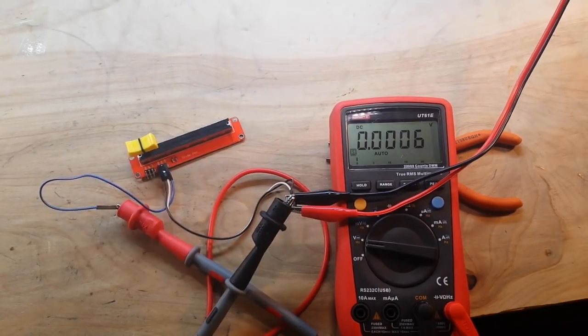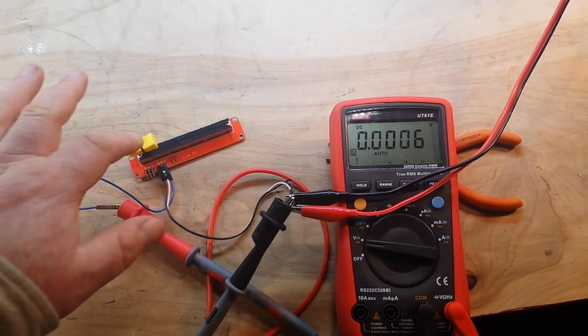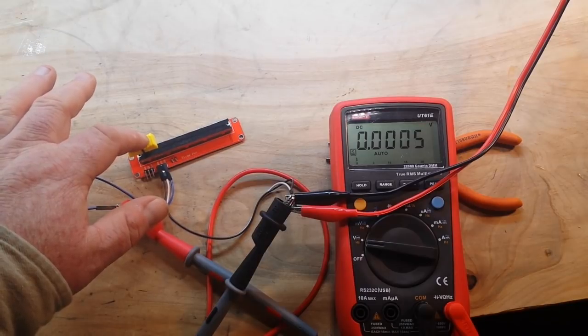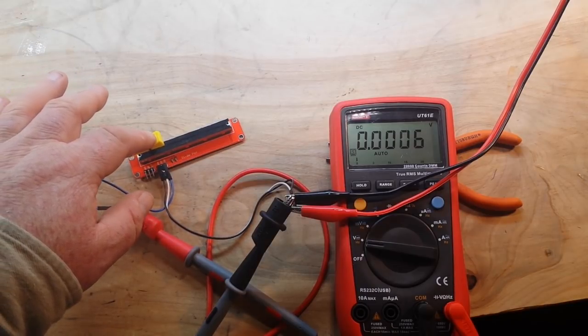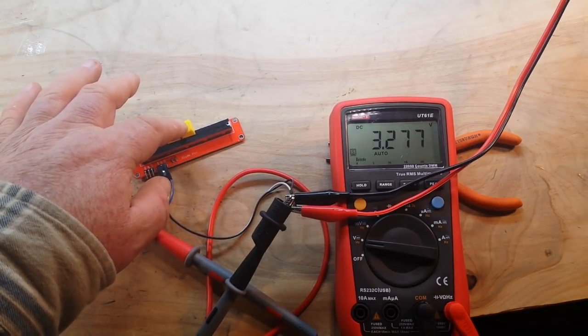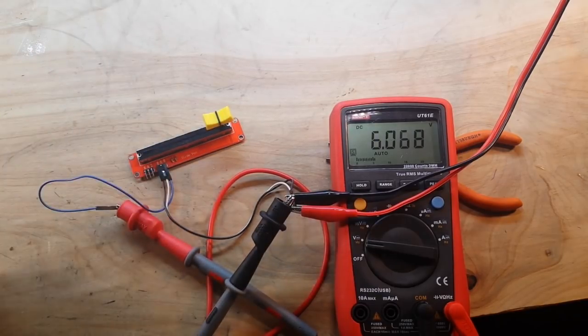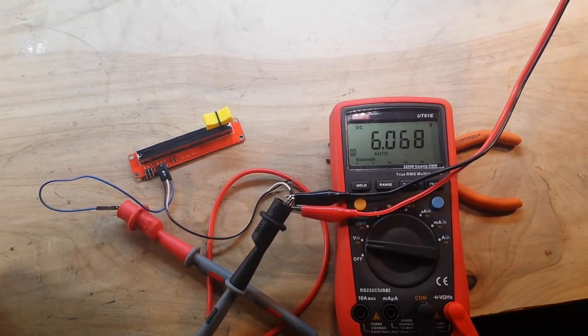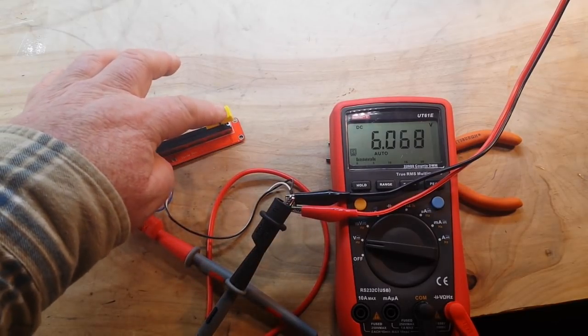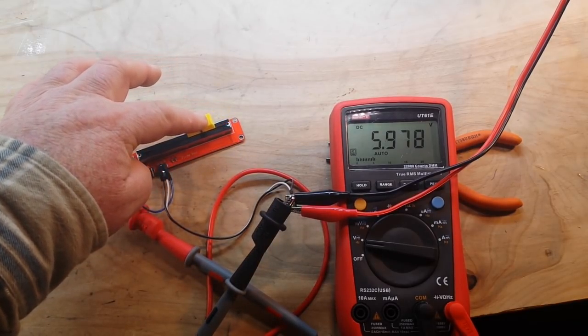Let's check out the other output. Okay, with the other output hooked up in the exact same fashion, at one end of the slider we are at zero volts. Right there in the middle we're getting 3.1. And fully in the opposite direction, 6.068. So the outputs do seem to be somewhat equal.